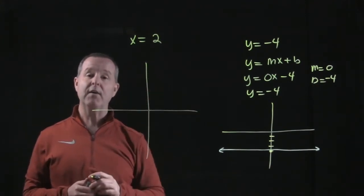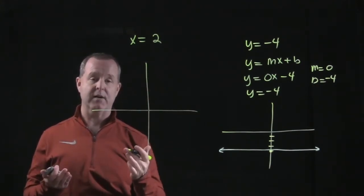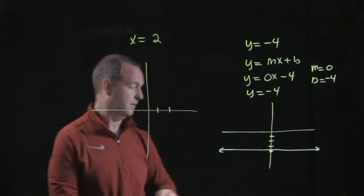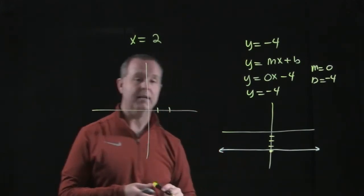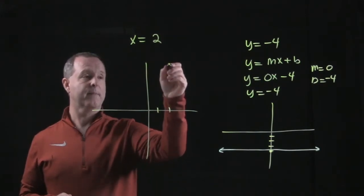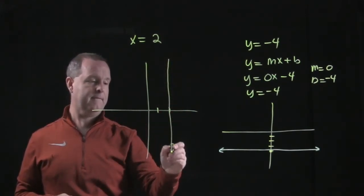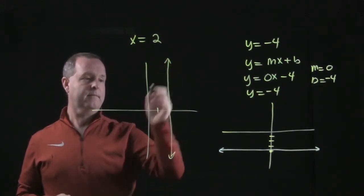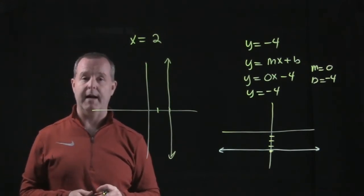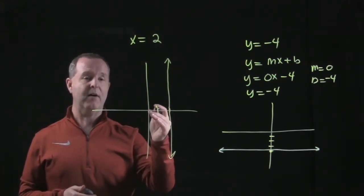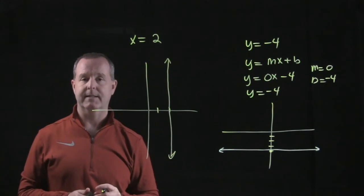For every value of y, what's my x value going to be? My x value is going to be 2. And so there I have a vertical line representing that every value of y, my x is 2.